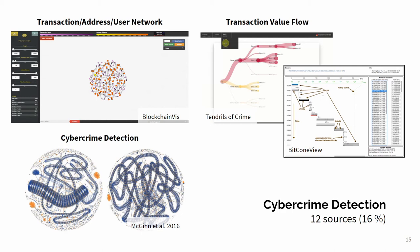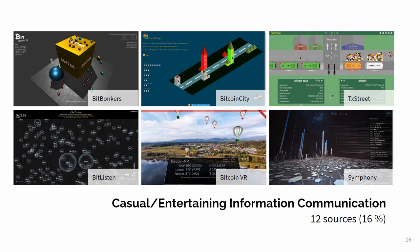The fifth task domain consists of casual, entertaining information communication tools that target a public audience and often present real-time transactions with 3D graphics. For example, Bitbunker shows animated balls, Bitcoin City displays transactions and blocks as a toy model of buildings and roads, or Bitcoin VR shows a flying balloon in a 360-degree virtual reality view.